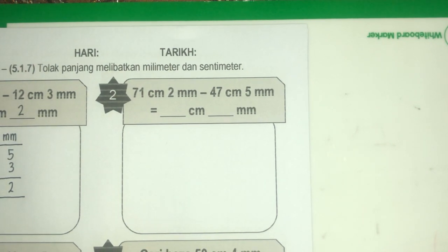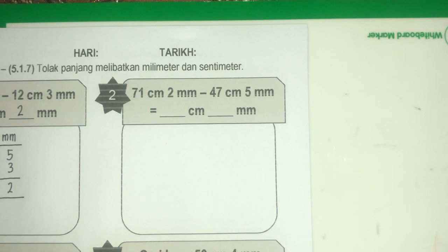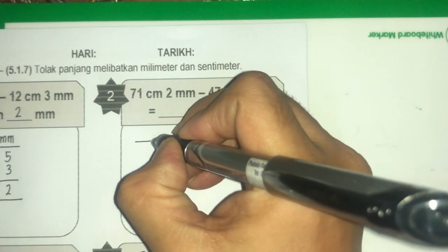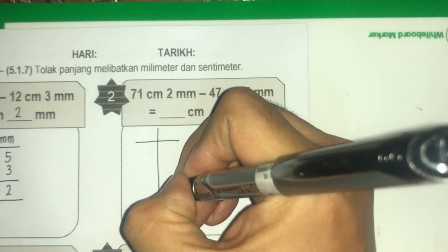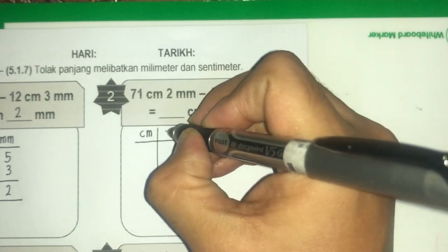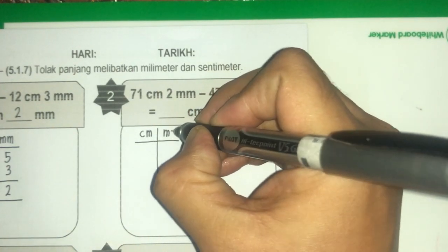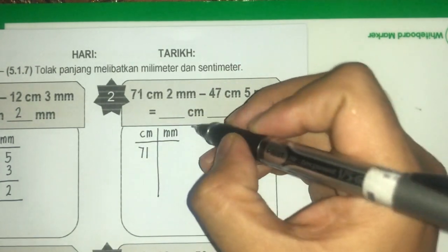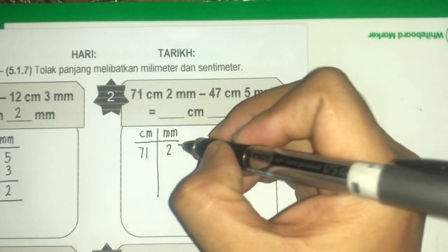Soalan yang kedua: 71 cm 2 mm tolak 47 cm 5 mm. Sama dengan berapa cm dan berapa mm? Sama juga macam soalan tadi — kita buat pembahagi antara sentimeter dan juga mm, dan masukkan nombor mengikut rumah masing-masing.